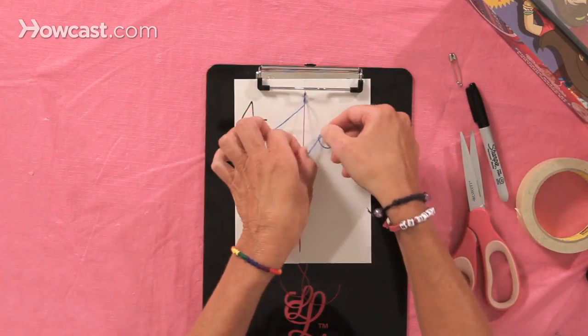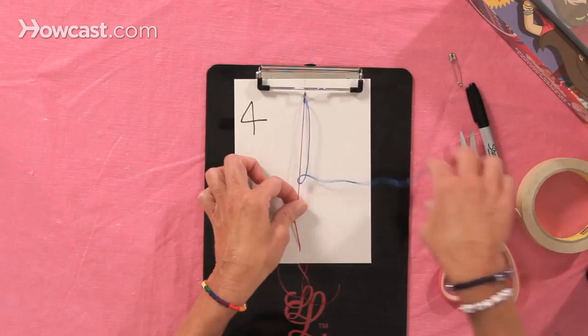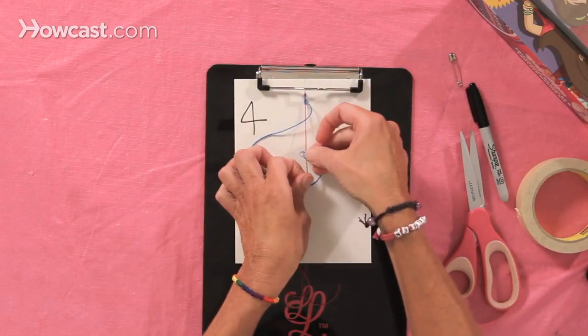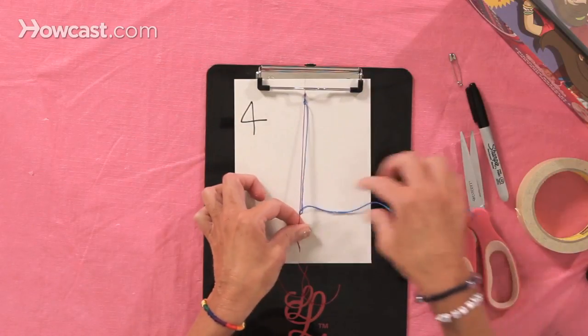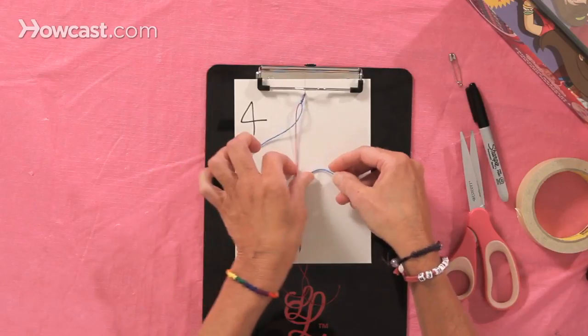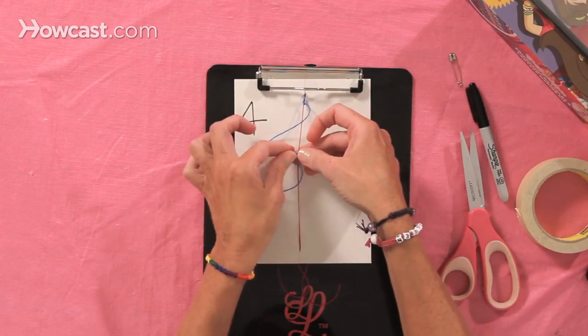This forward knot is used to make the basic candy stripe friendship bracelet, as well as the V. So once you master this forward knot, you should be able to get started on actually making a friendship bracelet.